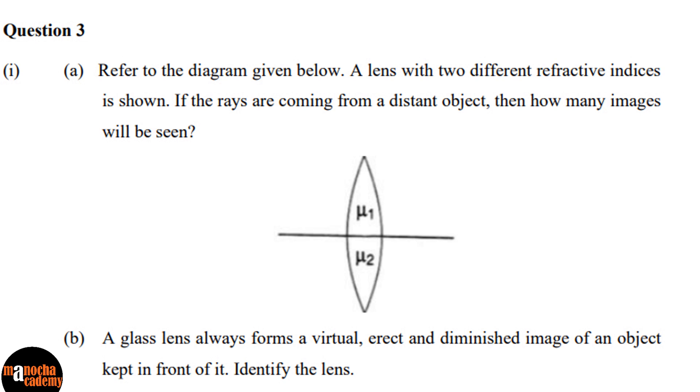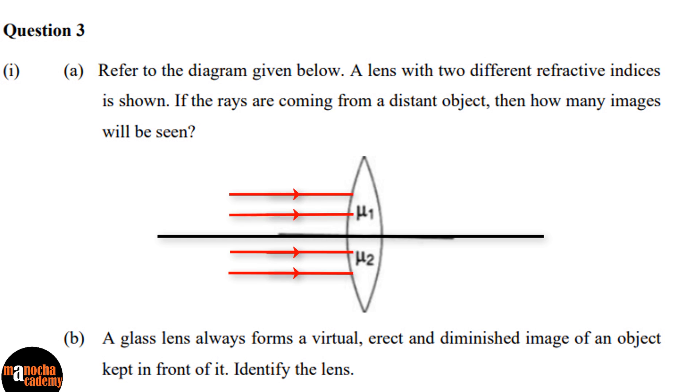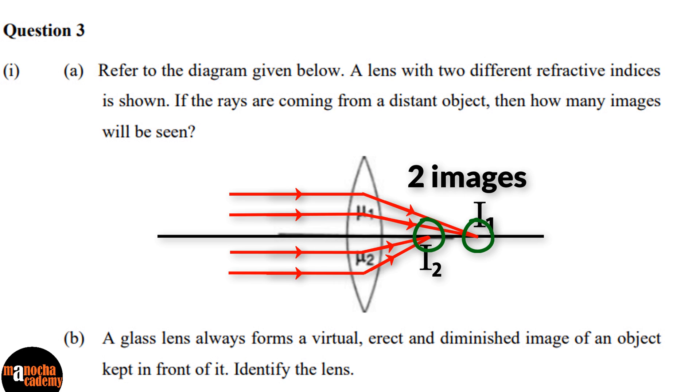Tip number 5: Take a smart guess. Sometimes when reading application based questions, we get lost in the words and are not able to figure out which chapter or concept is being asked. Reread the question and try to take a smart guess on the concept being tested — be like a detective and look for clues in the question. For example, in this physics ICSE specimen paper question, the lens has two parts with two different refractive indices. If rays are coming from a distant object, those are parallel rays, and parallel rays meet at the focus. But since this lens has two parts with two different refractive indices, it will have two foci and will form two images — one from the top half and one from the lower half. So make a smart guess like this if you are not sure what to do, apply your concepts, and do the best you can — because remember, there are no negative marks.